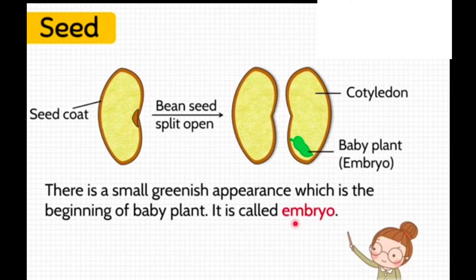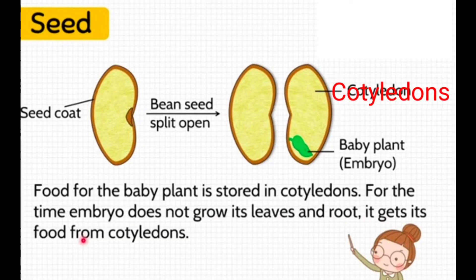Now we will learn about cotyledons. Food for the baby plant is stored in the cotyledons. For the time the embryo does not grow its leaves and roots, it gets its food from the cotyledons.